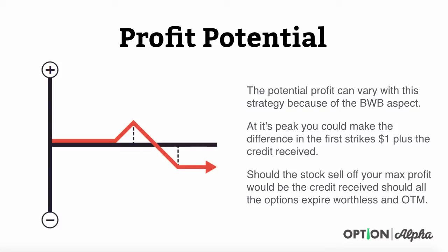Should the stock sell off, your max profit would be the credit received should all the options expire worthless and out of the money. This is the reason why we like to take in a credit on this type of trade, because if the stock goes down, we have no downside risk in our trade.